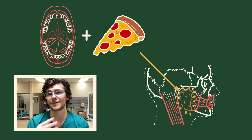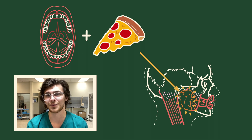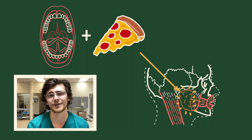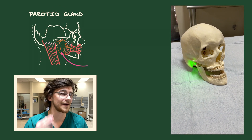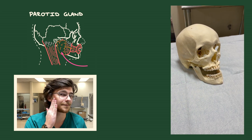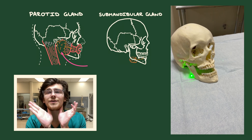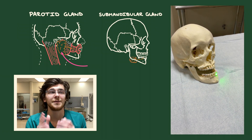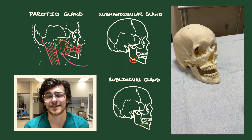When mechanoreceptors and taste receptors sense that food is present in the oral cavity, they send signals to the salivary glands of the body. There are three pairs: the parotid gland, just anterior to the ear; the submandibular glands, next to the angle of the mandible; and the sublingual glands, which lie beneath the tongue.